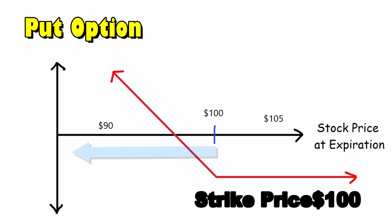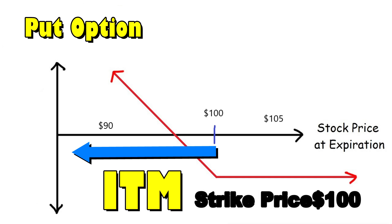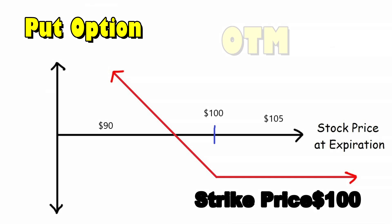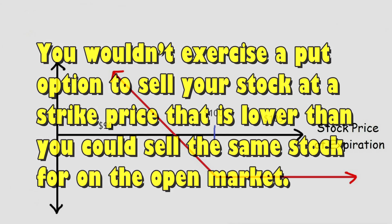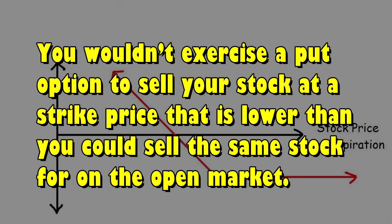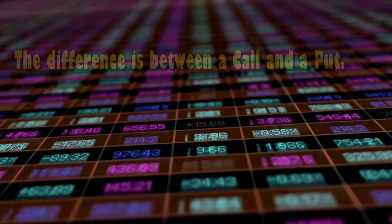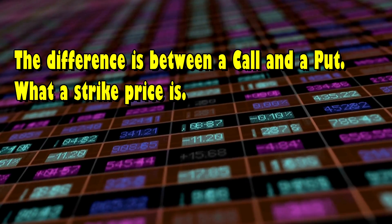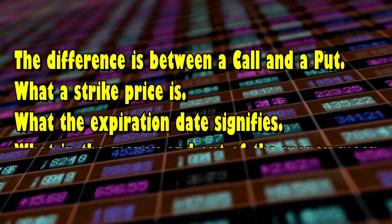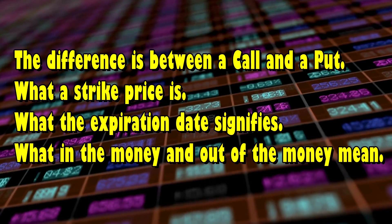If you're talking about puts, a put is in the money when the stock price is below the strike price, and it's out of the money if the stock price is higher than the strike price. You wouldn't exercise a put option to sell your stock at a strike price that is lower than you could sell the same stock for on the open market. So now you know the difference between a call and a put, what a strike price is, what the expiration date signifies, and what in the money and out of the money mean.